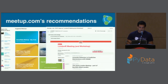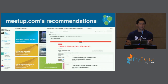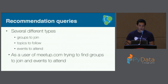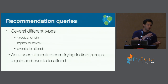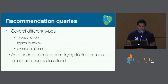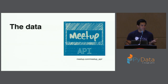They also send emails about upcoming events that fit your profile, and when browsing their calendar they rank and sort events — like at 6:30 there are five different events, how do we know Kevin's more interested in one versus another? There are several recommendation queries we'll walk through today: groups to join, topics to follow, and events to attend. We'll take this from the perspective of a meetup.com user. The data we grabbed is from the meetup API, a very rich API.